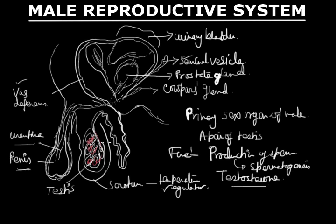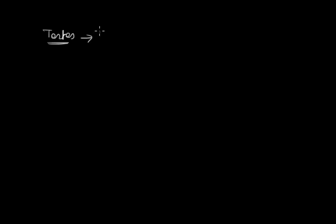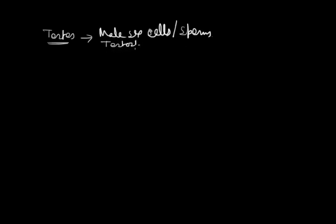This is the basic structure of the male reproductive system. The testis is responsible for the production of male sex cells or sperms by the process known as spermatogenesis, and for producing testosterone, the male hormone for developing sexual characteristics.